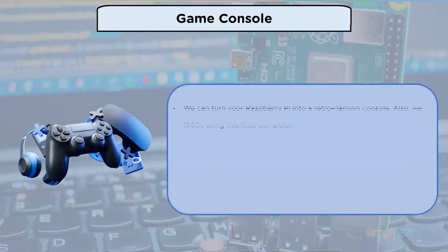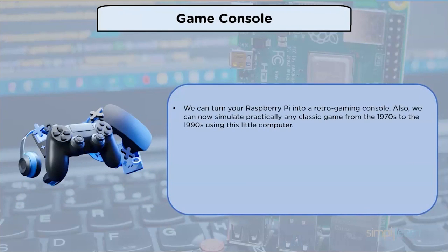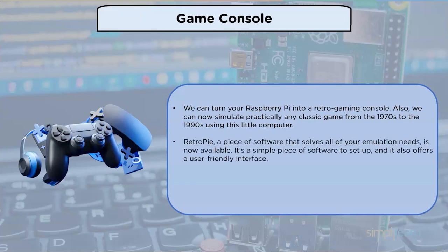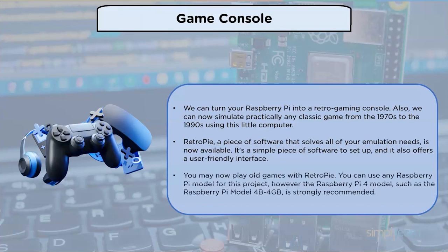Game console: we can turn your Raspberry Pi into a retro gaming console and simulate practically any classic game from the 1970s to the 1990s. RetroPie is a piece of software that solves all your emulation needs and offers a user-friendly interface. You can use any Raspberry Pi model, however the Raspberry Pi 4 Model B 4GB is strongly recommended.